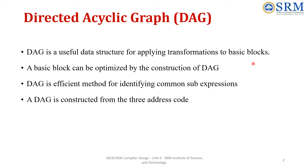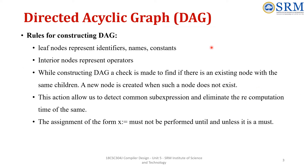DAG is a useful data structure for applying transformations to basic blocks. A basic block can be optimized by constructing this DAG, and this is an efficient method for identifying common sub-expressions. Usually we construct the DAG from the 3-address code. Now we will see the rules for constructing the DAG.